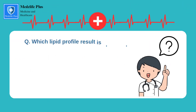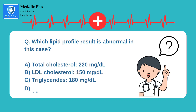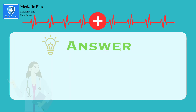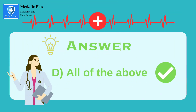Question number 2: which lipid profile result is abnormal in this case? A. Total cholesterol, 220 mg/dL. B. LDL cholesterol, 150 mg/dL. C. Triglycerides, 180 mg/dL. D. All of the above. The right option is D, that is all of the above.